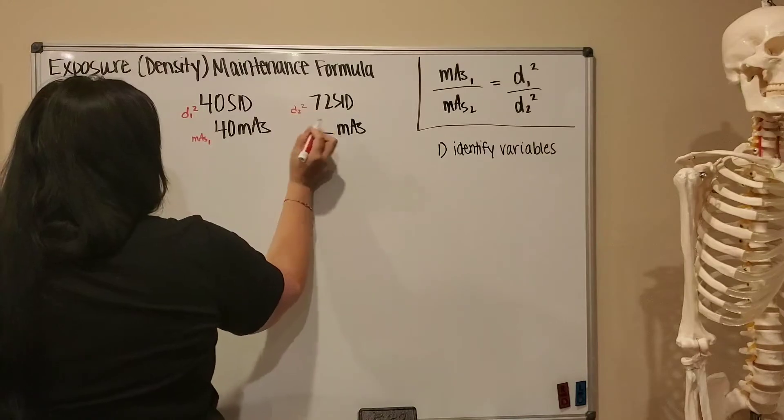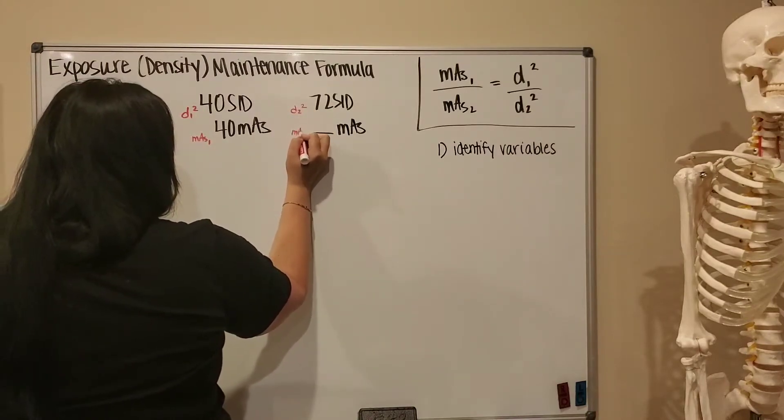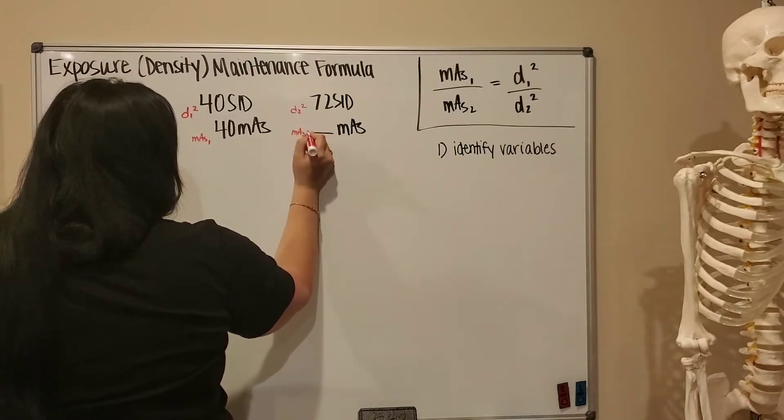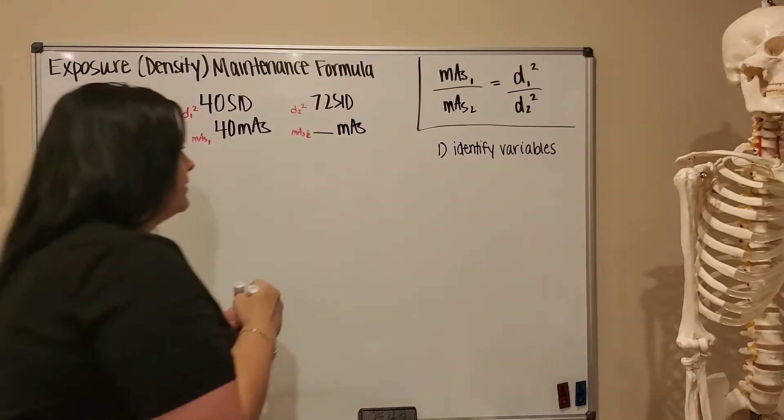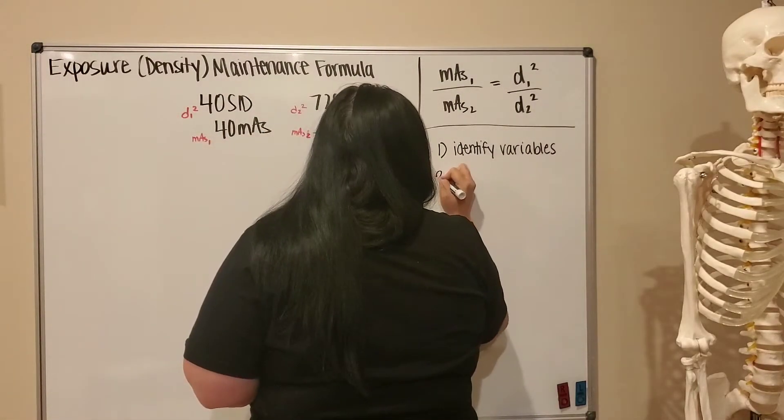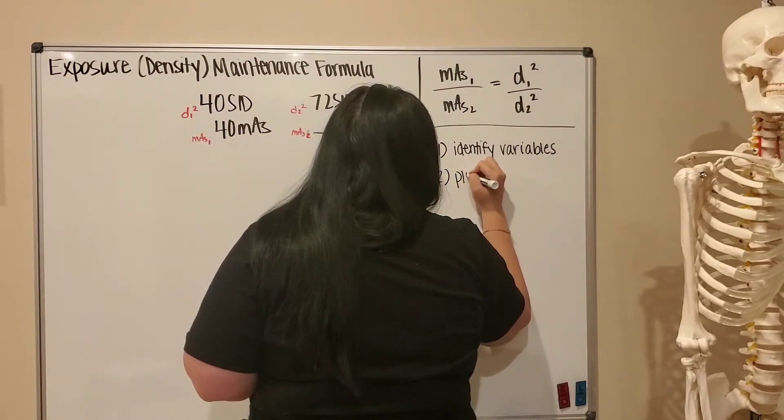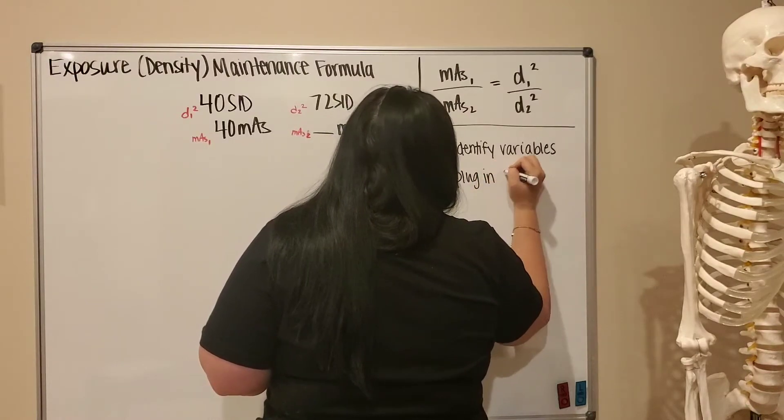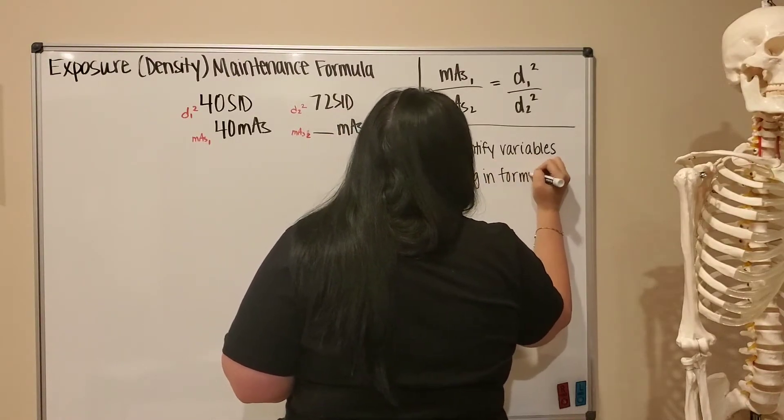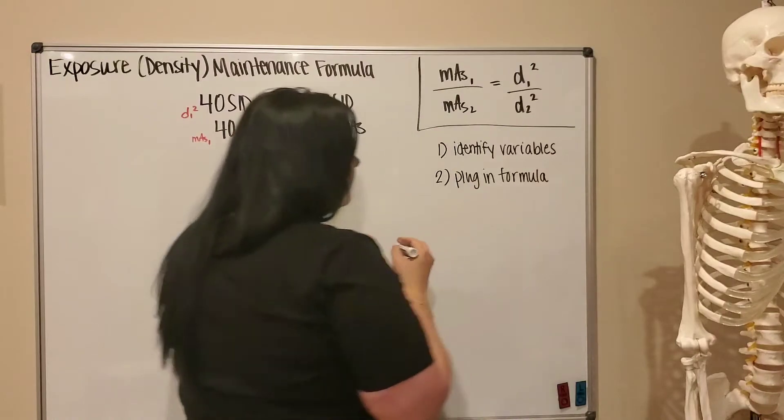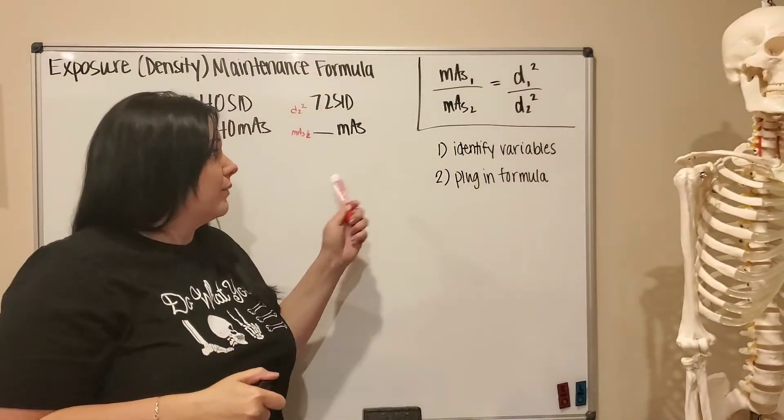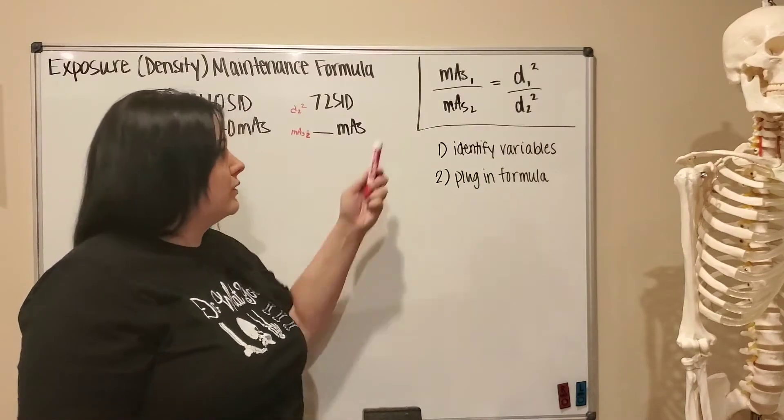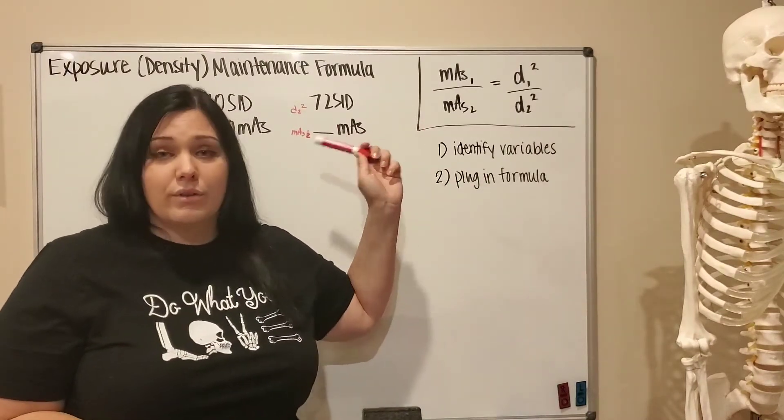That is our unknown. Okay, second step is you want to plug those variables into the formula. And the reason why I like to do that right away is the quicker that you get those moved into the format of the density maintenance formula, the less of a chance there is for you to put them into the wrong spot later on.